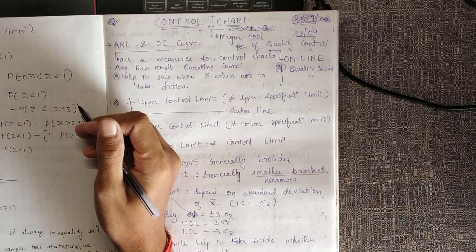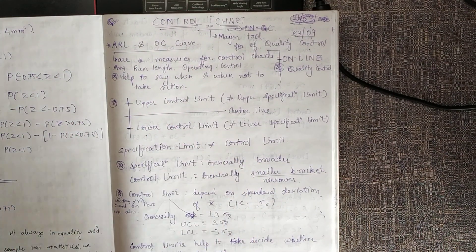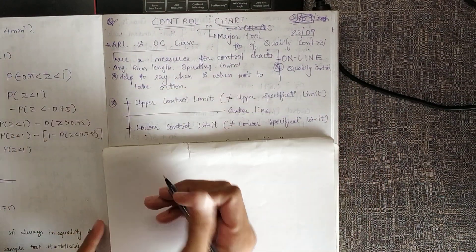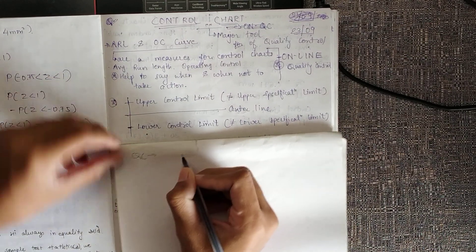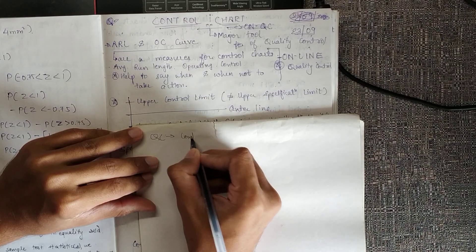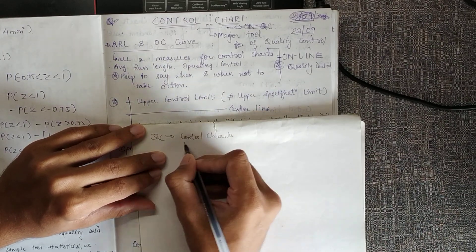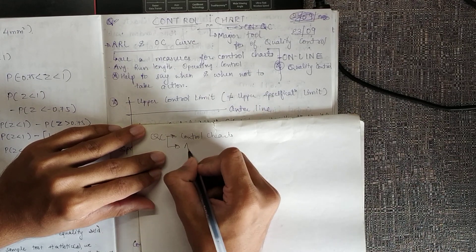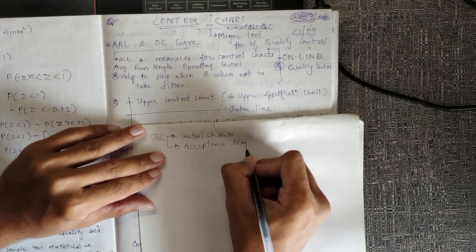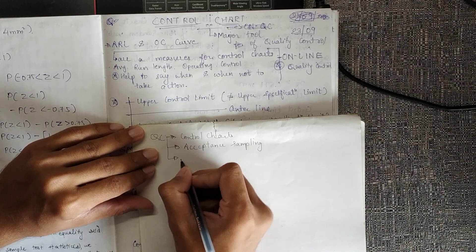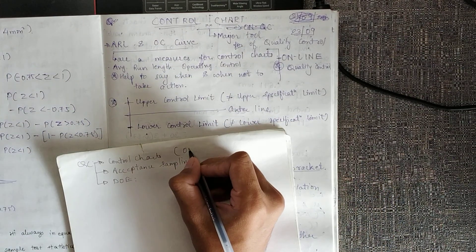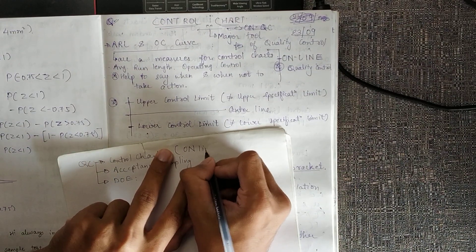Starting with the control chart method of quality control. Broadly, there are three ways to do quality control: first is using control charts, then using acceptance sampling, and third is using design of experiments. Control charts are an online quality control method, while design of experiments is offline.